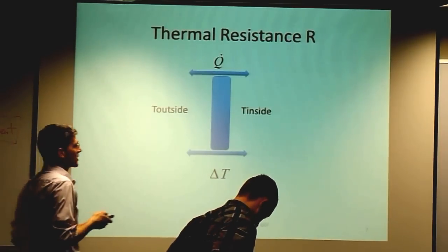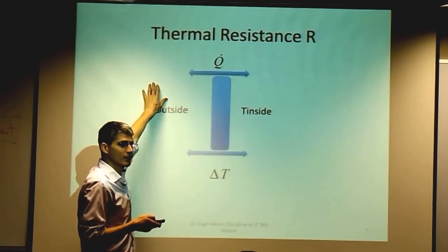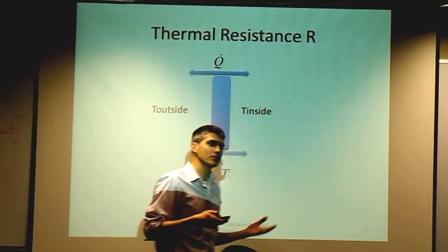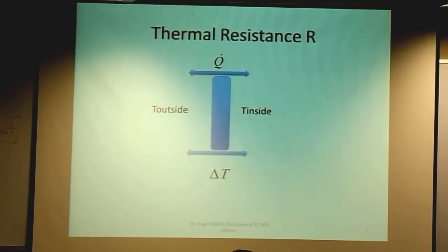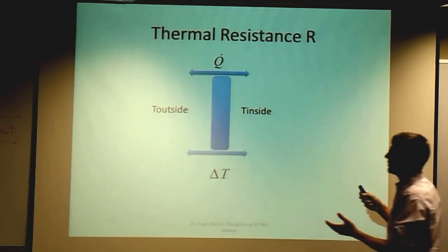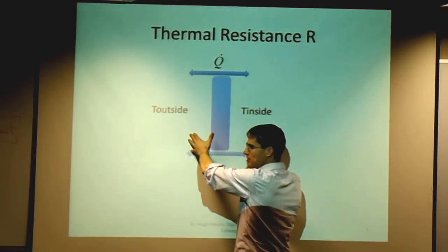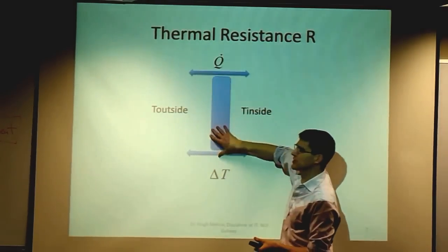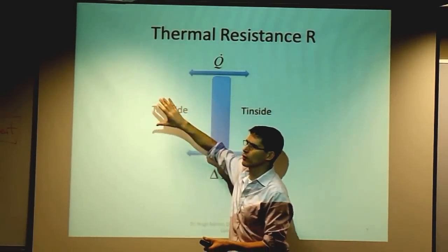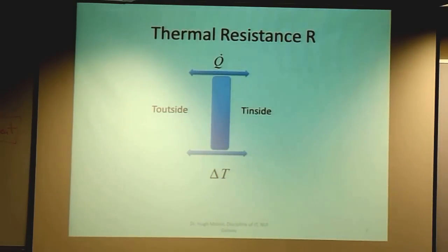Resistance is essentially how resistant a material is to heat transfer. The likes of metal does not have a high thermodynamic resistance, whereas fiberglass does. So where you have a temperature potential across a surface, the resistance would dictate how much energy flows across that surface.